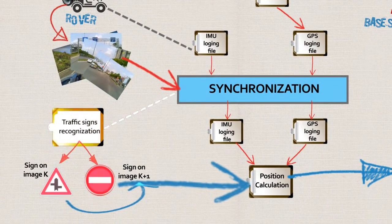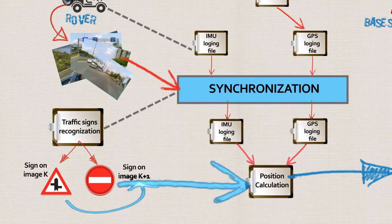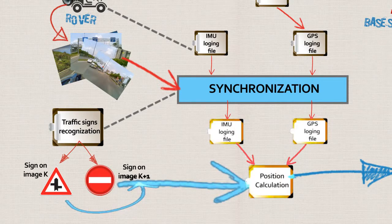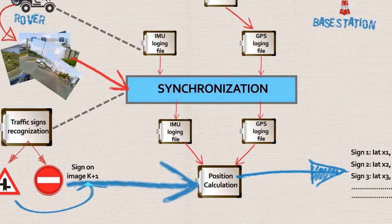Traffic signboards are auto-recognized. After that, the coordinates of traffic signboards are calculated based on IMU and GPS parameters, and then displayed on the map.